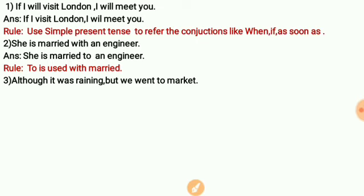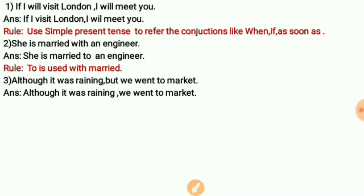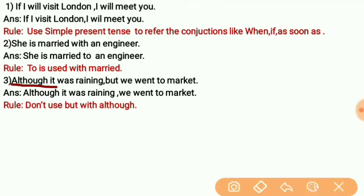Next: 'Although it was raining, but we went to market.' Don't use 'but' along with 'although' — they are both conjunctions and cannot be used together in the same clause. The correct form drops 'but': 'Although it was raining, we went to market.'